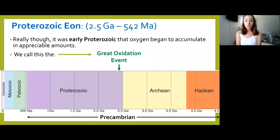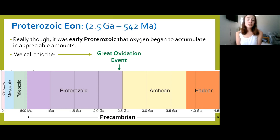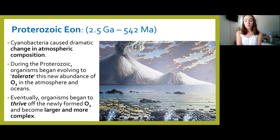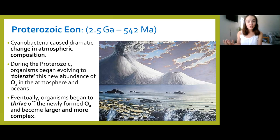Moving on to the Proterozoic Eon — the Great Oxidation Event actually occurred in the early Proterozoic. The most recent estimates place it at around 2.4 to 2.2 billion years ago. Cyanobacteria caused dramatic atmospheric composition change not only by producing free oxygen, but also by oxygenating many reduced compounds in the atmosphere, on Earth's surface, and in Earth's oceans — which is what happened with the iron within the BIF formations.